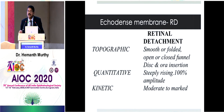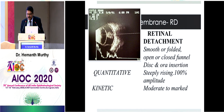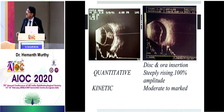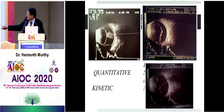In retinal detachment, the surface is always smooth or folded, with insertion at the disc and at the ora. There is a 100% reflectivity spike and moderate after-movements. On topography you can clearly make out a closed funnel detachment with coexisting choroidal detachment. A steeply rising 100% reflectivity spike is typical. Another topographic image shows insertion at the disc — this is a clear retinal detachment.